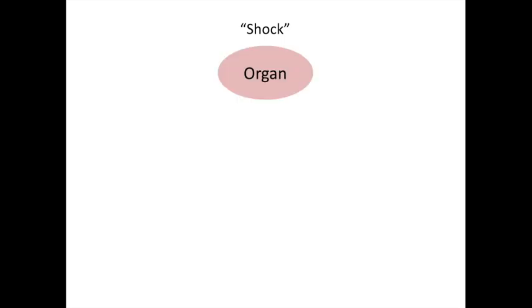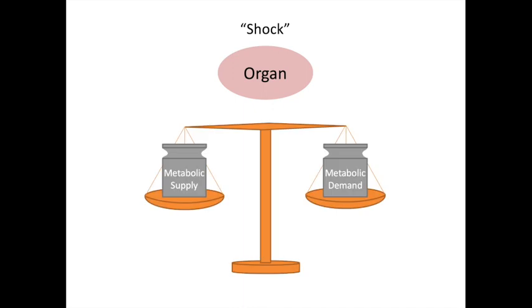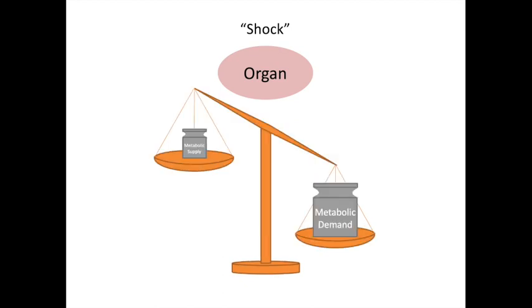It's important to have an understanding of what shock actually is. Shock is not strictly low blood pressure or hypotension, although patients in shock often have low blood pressure. If you have a healthy organ, its metabolic demands are matched by its metabolic supply — they're in balance. Circulatory shock occurs generally because of a decrease in metabolic supply, meaning there is not enough supply to match the organ's metabolic demand and you get organ damage. For most intents and purposes, metabolic supply is blood flow, so shock is a lack of blood flow.